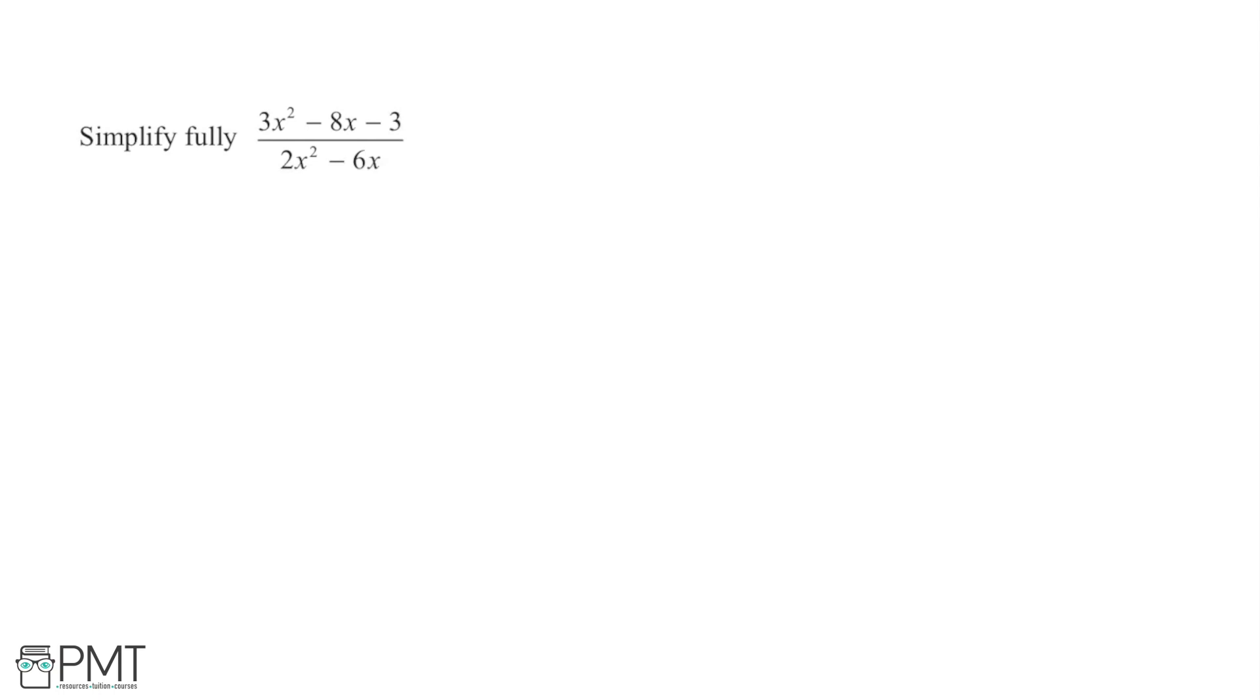So here I'm asked to simplify fully the following fraction. We have 3x squared minus 8x minus 3 all over 2x squared minus 6x.